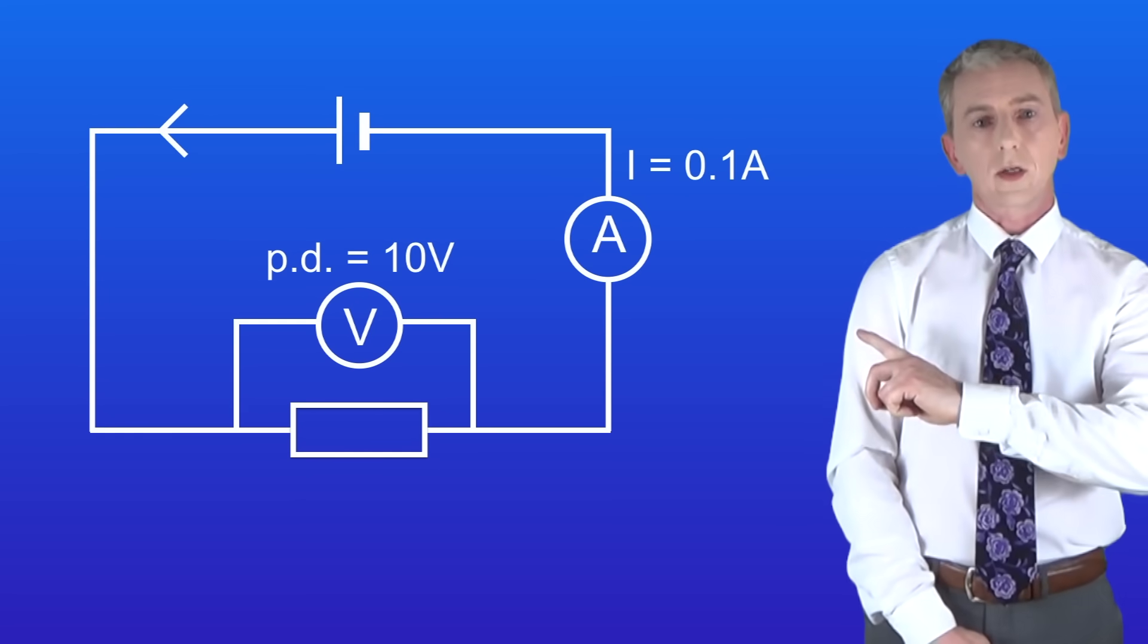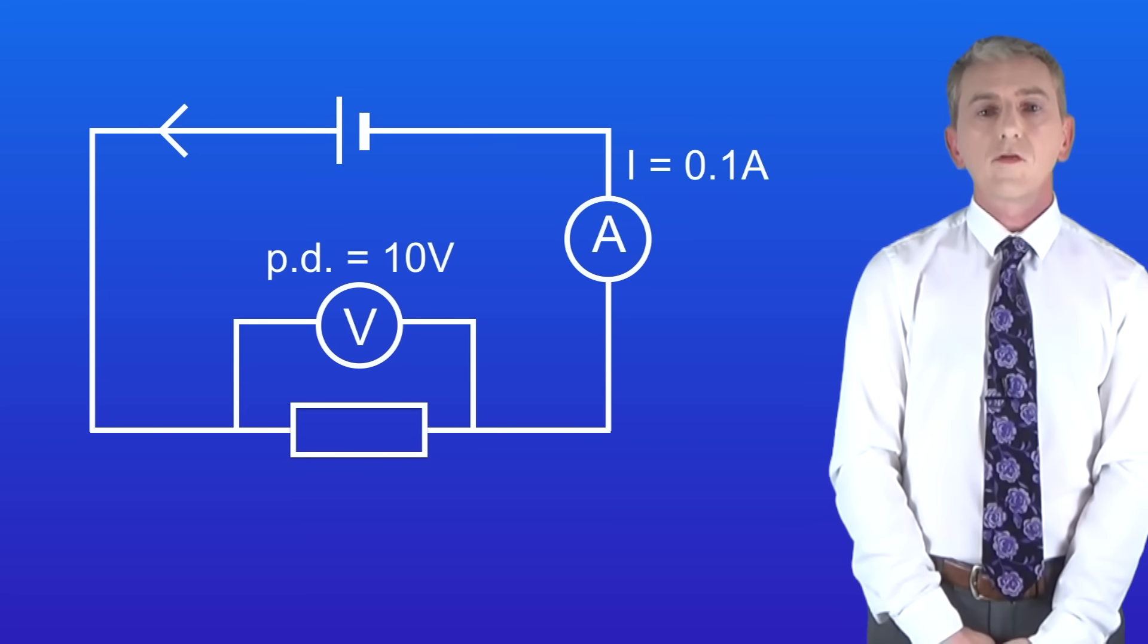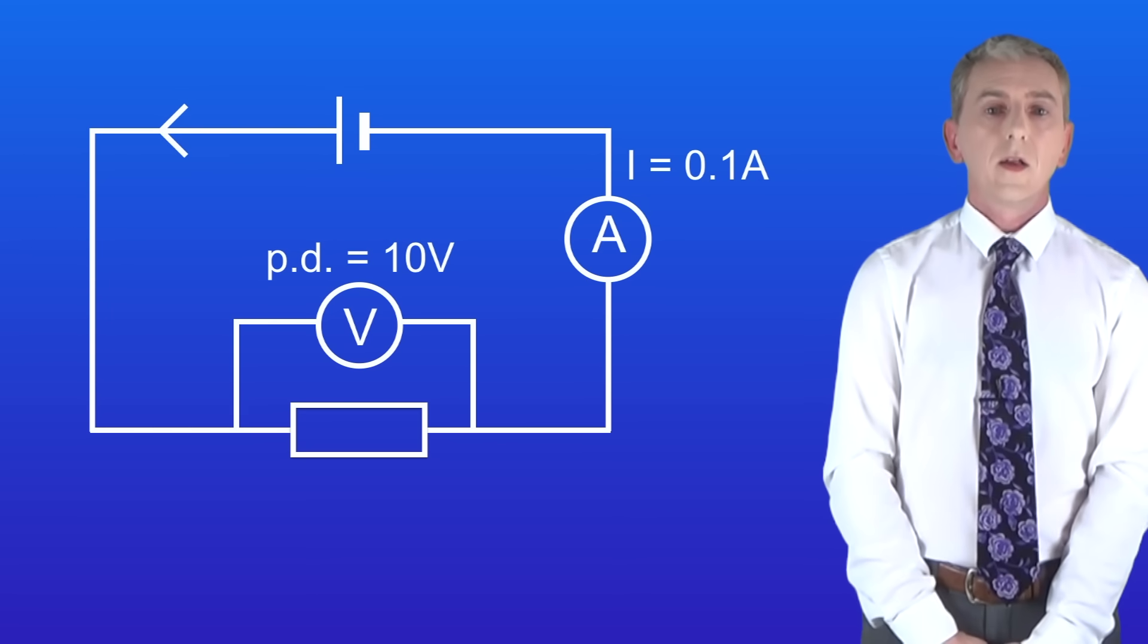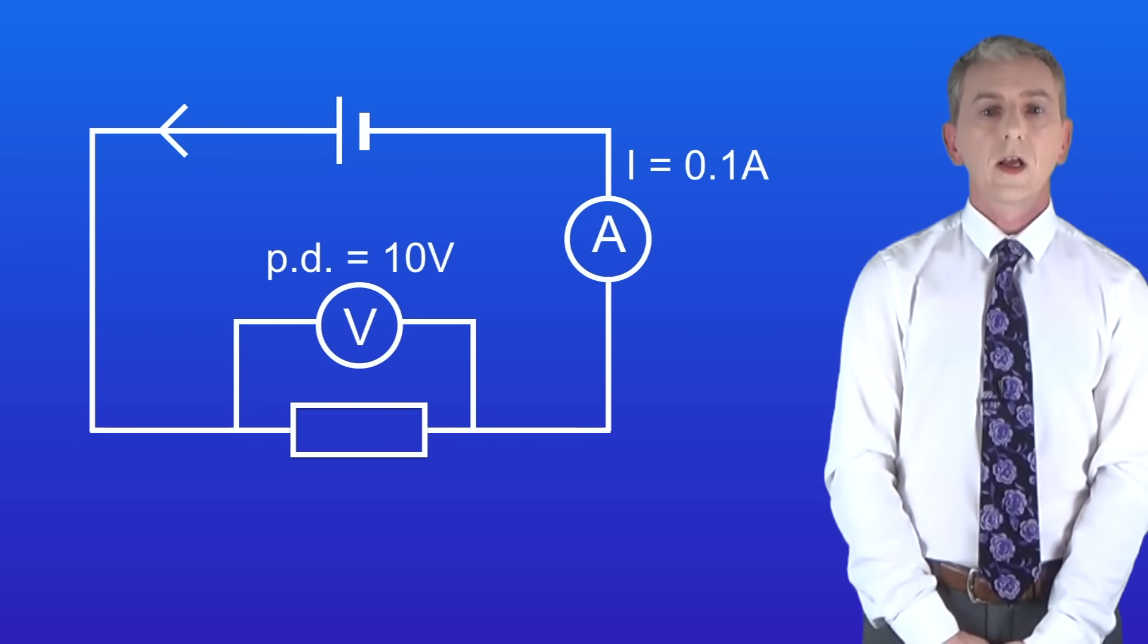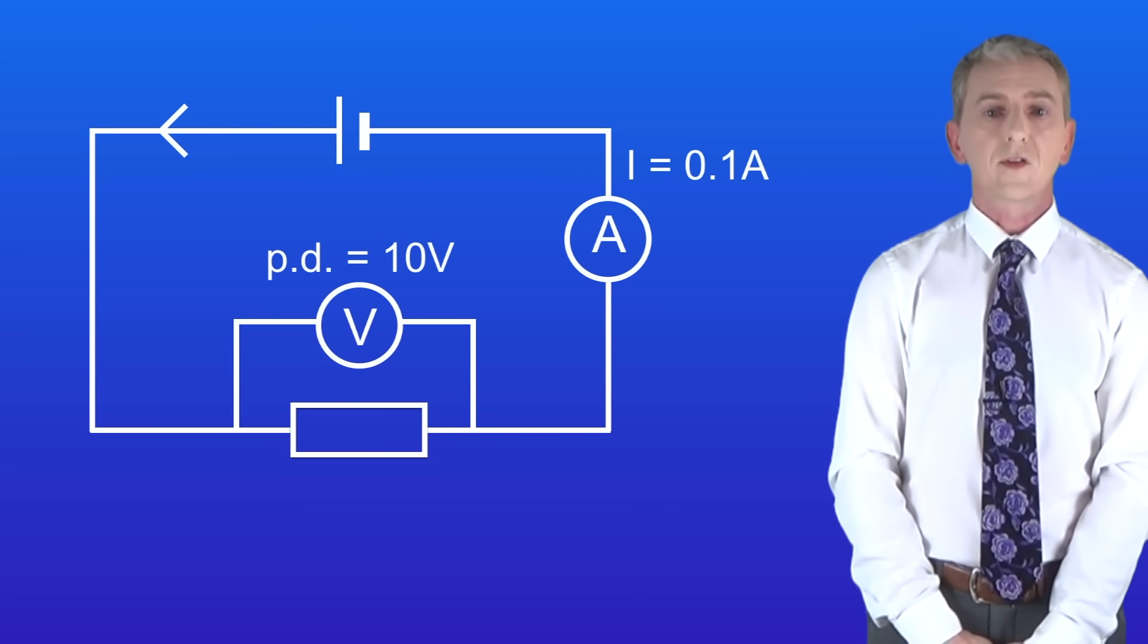Take a look at this circuit. Here we have a resistor connected to a cell. The resistor has a potential difference of 10 volts and a current of 0.1 amperes is flowing.